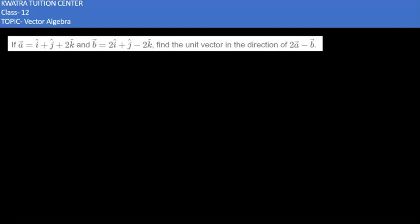Here we have a question and the question says, if vector a is equal to i hat plus j hat plus 2k hat and vector b is i hat plus j hat minus 2k hat,